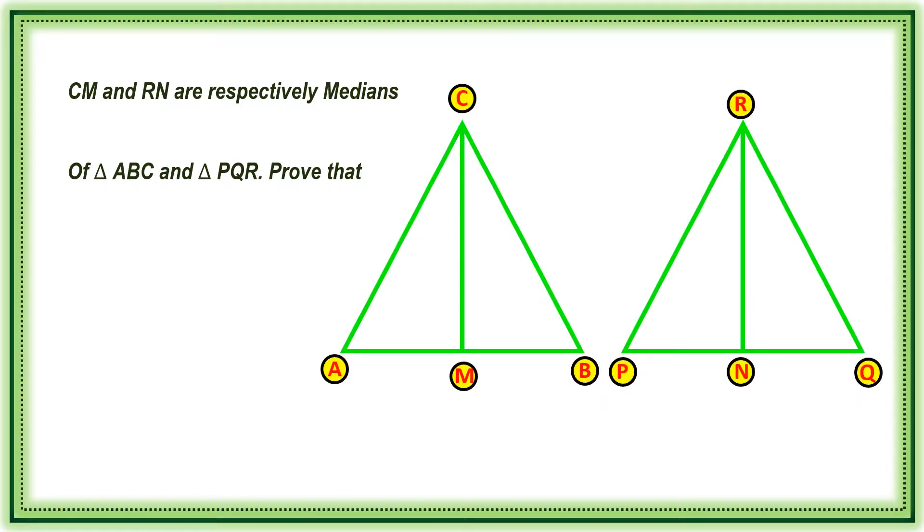CM and RN are respectively medians of triangle ABC and triangle PQR. Prove that first one,